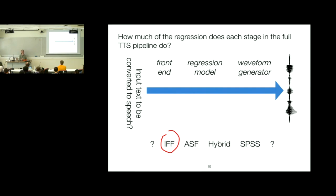Paul Taylor introduced some terminology for this. There's a way in which we only ever predict symbolic things in the front end — Paul calls that the independent feature formulation, because these symbolic features are treated independently and we have some weighted sum when retrieving things from the acoustics. Some systems go one step further and predict acoustic properties as well before choosing waveforms — Paul called that the acoustic space formulation. In unit selection, we retrieve bits of waveform from a database based on either their symbolic names or their acoustic properties.